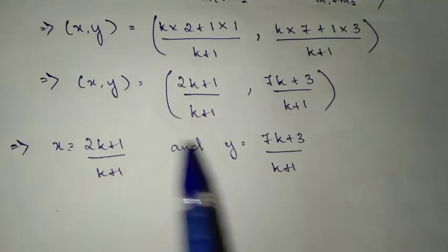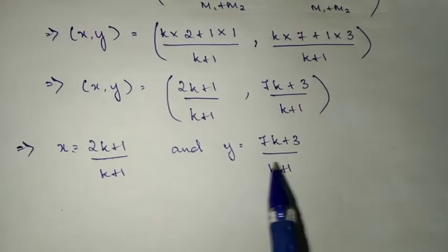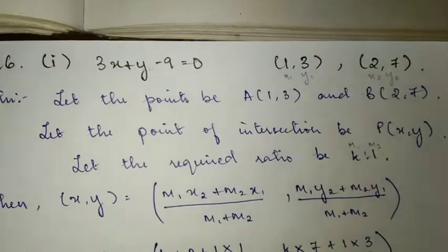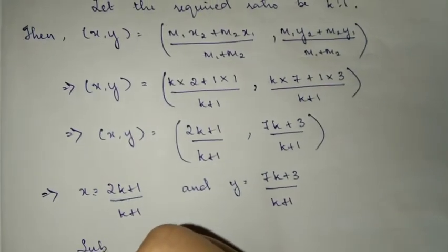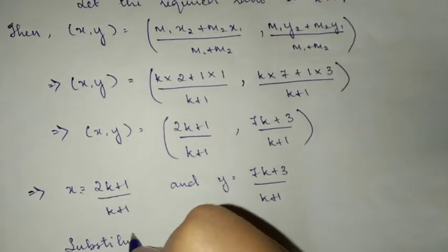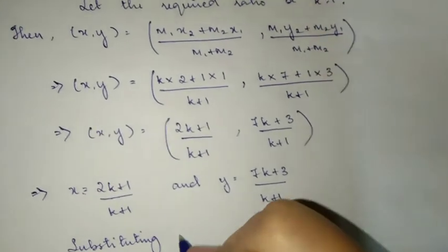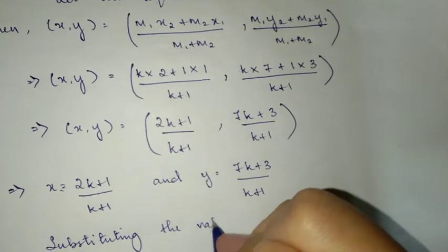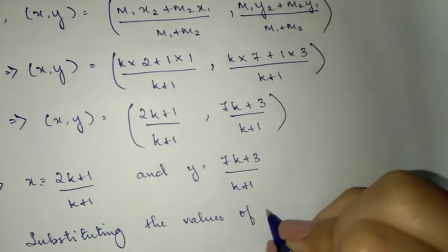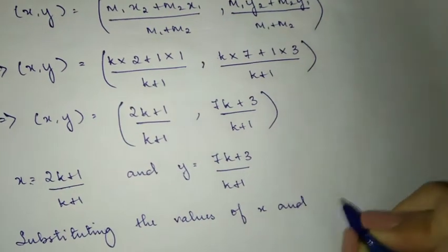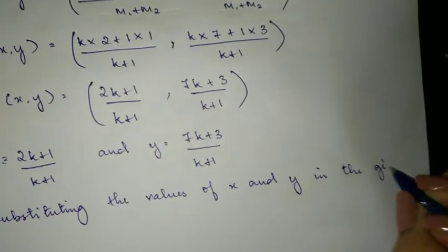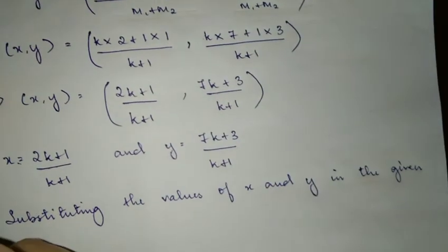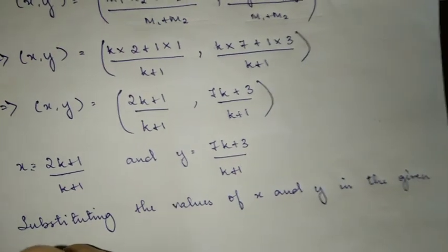Now we have x and y. The question gives us an equation: 3x + y - 9 = 0. We will substitute the values of x and y into this equation. Substitute x and y into the line equation.